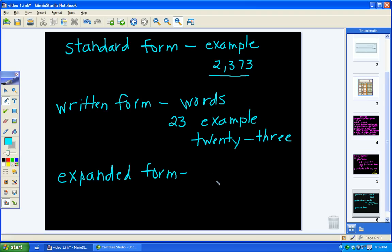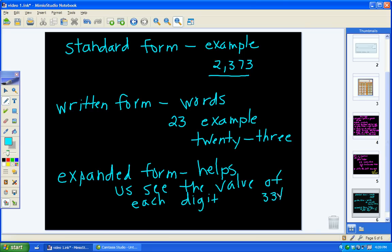And our last form is expanded form. Expanded form is really not used very often, but it's very important so that you can see the value of each digit. So, let's say I told you the number 331. We would look at each of them and I could say, I know that three is worth 300. I know that three is worth 30. And, I know that one is worth just one. That would be expanded form. And, those are the notes that you need for the next quiz.